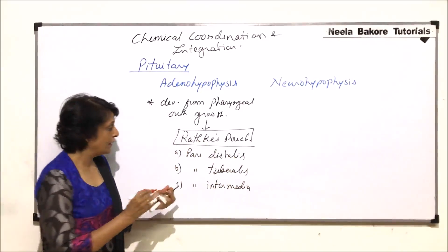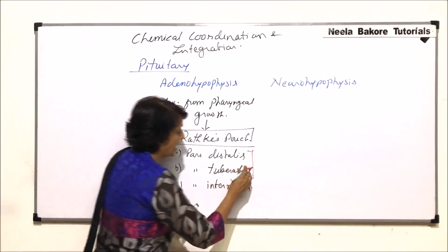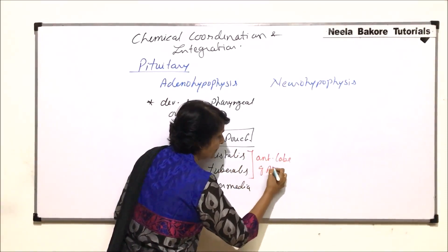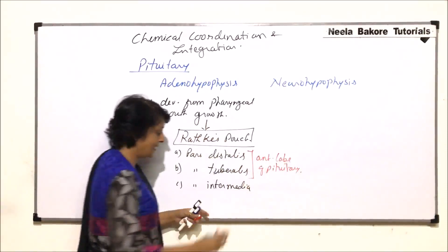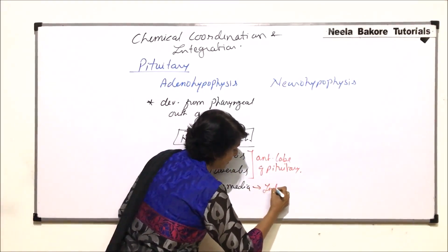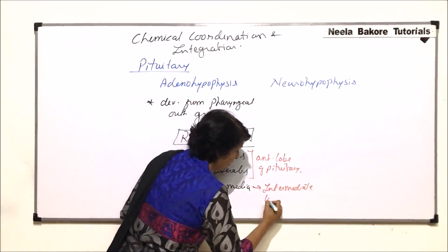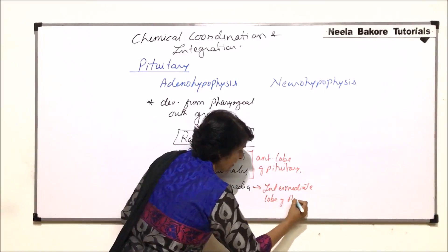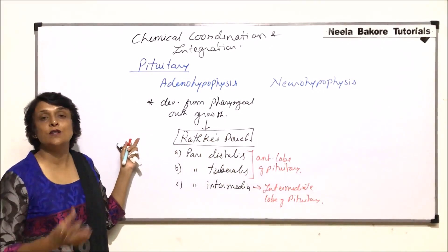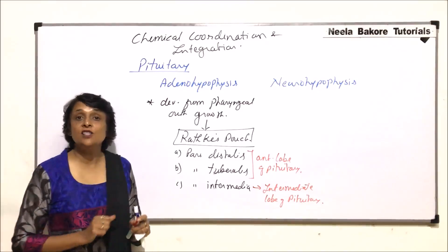Out of these three parts, pars distalis and pars tuberalis join together to form the anterior lobe of the pituitary gland, and pars intermedia forms the intermediate or middle lobe of the pituitary. This means the adenohypophysis, which is the anterior lobe of the pituitary, is developed from the pharyngeal outgrowth.